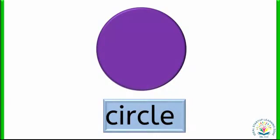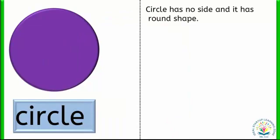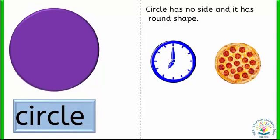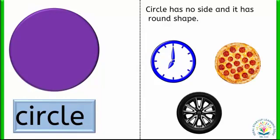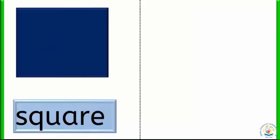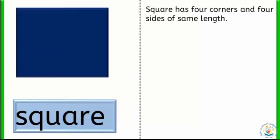Circle. Circle starts with the letter C. Circle has no sides and it has a round shape. Objects with circle shapes are clock, pizza, and tire. Square. Square starts with the letter S. Square has four corners and four sides of the same length.